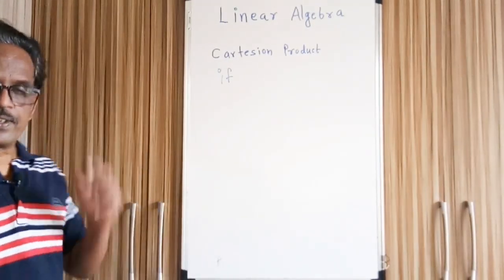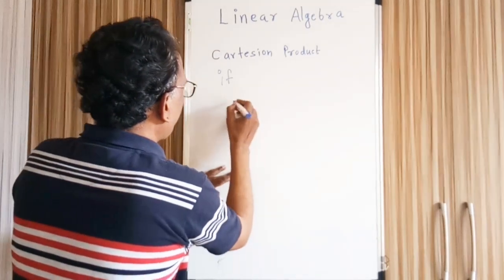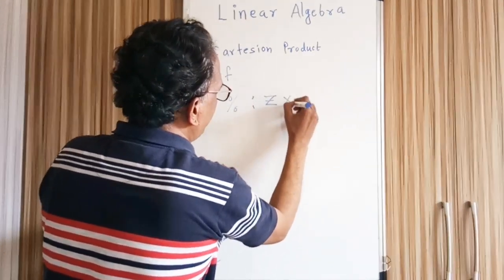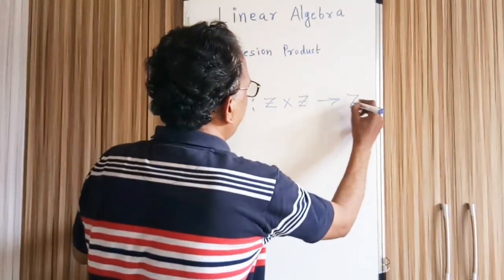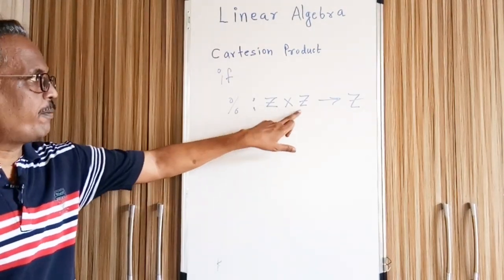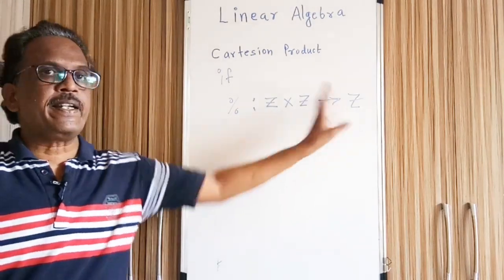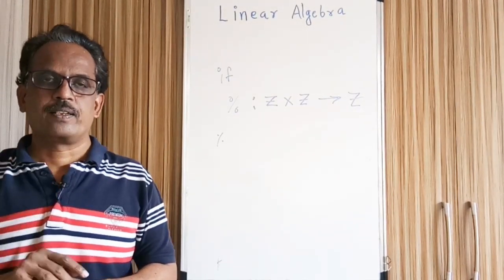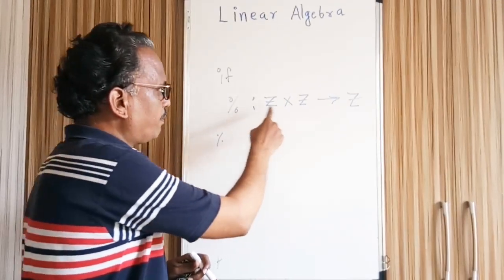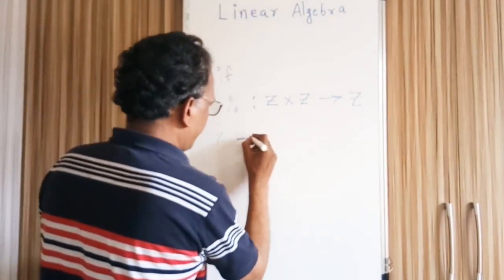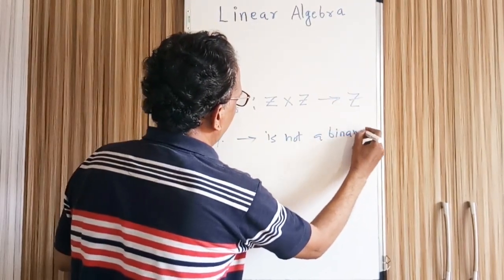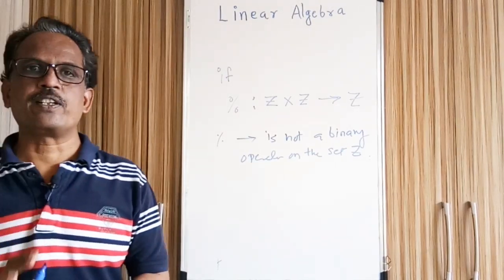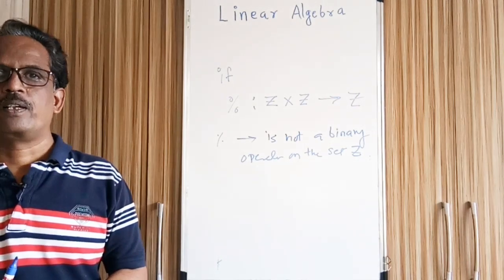Is there any example where a set is not closed with respect to a particular operation? Let us consider the set of integers Z and the operation of division. The set of integers Z and the result is not falling in Z. If I pick any two elements — let us say 2 from here and 3 from here — 2 by 3 is not a number in the set of integers. So division on Z cross Z is not a mapping from Z cross Z to Z. Therefore division is not a binary operation on the set Z.